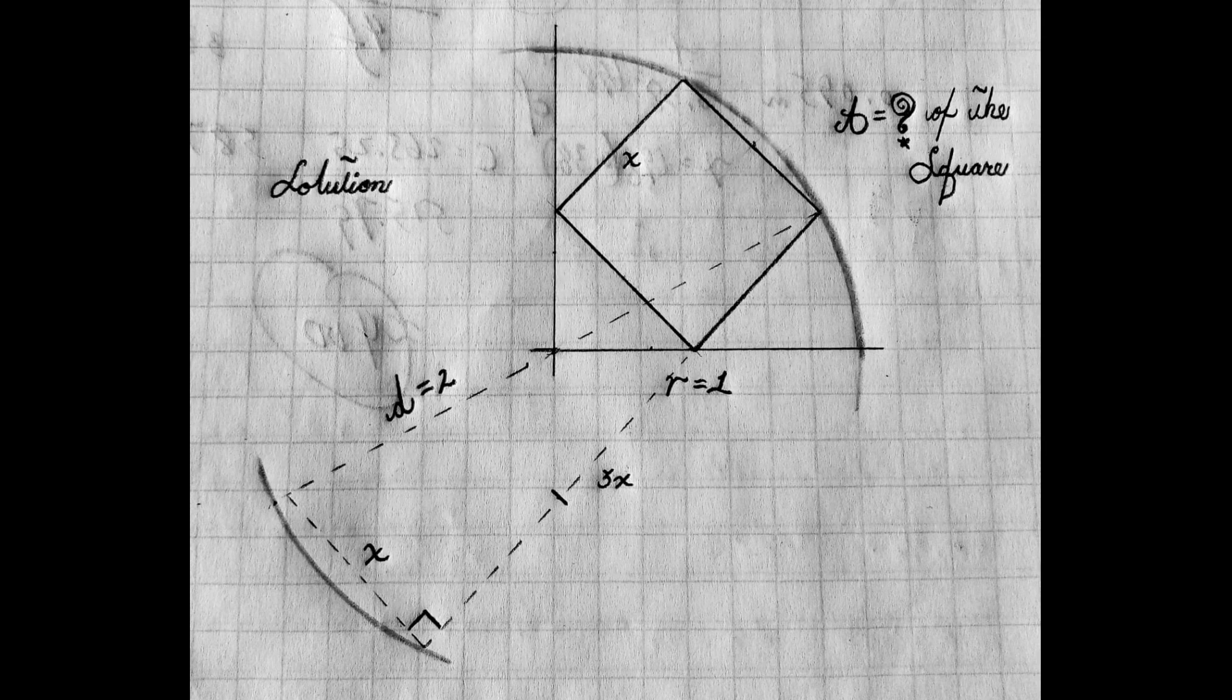So that gives me x squared plus 9x squared equals 4. And I go ahead and factor out the x, well add them. Essentially that's all I have to do. Now I have 10x squared equals 4.